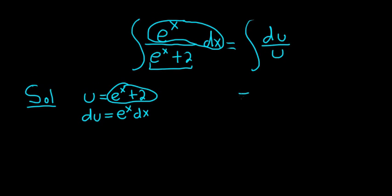So whenever you have du over u, this is equal to the natural log of the absolute value of u plus our constant of integration, c.